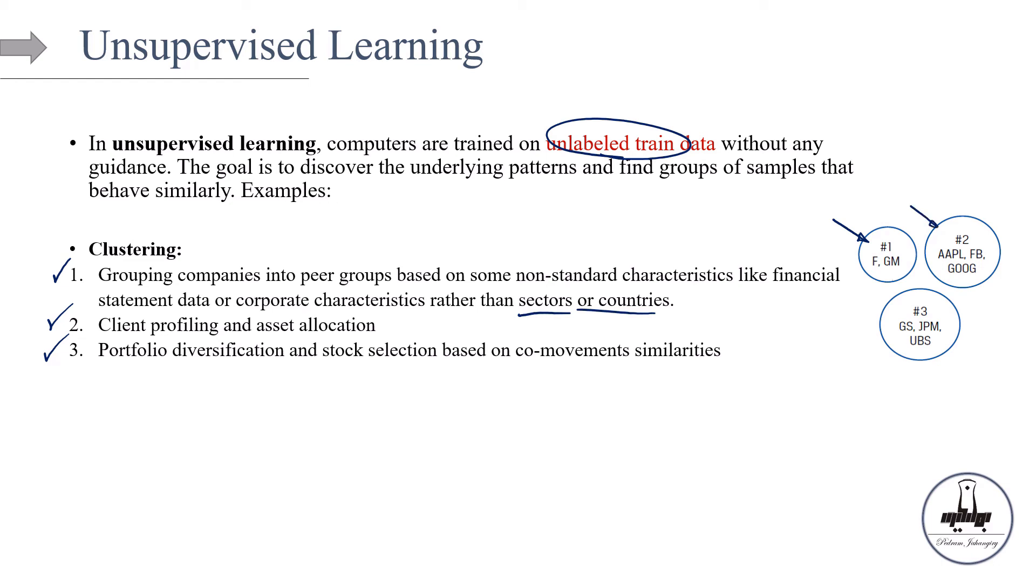But what if at the end of the day, if you look at their co-movement similarities, maybe Goldman Sachs and Apple are behaving very similarly. So why put them in different buckets? Well, maybe we should then put them in the same market. OK, so these are the examples of clustering.